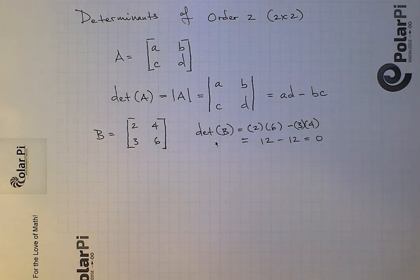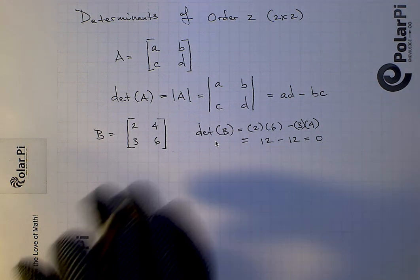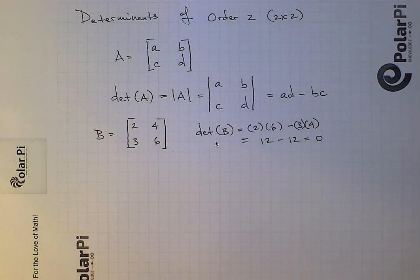As you'll learn by watching more of my videos or other videos on linear algebra, having a determinant of zero means that the matrix is not invertible. That is, this matrix does not have an inverse because this determinant is zero.